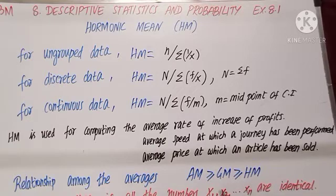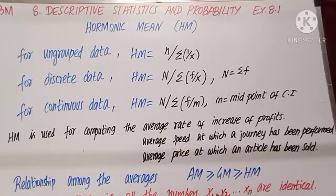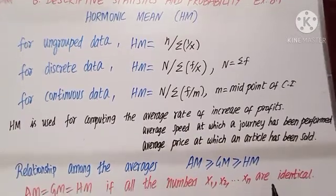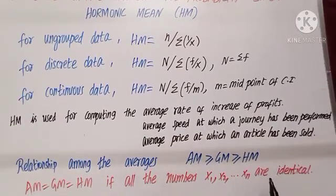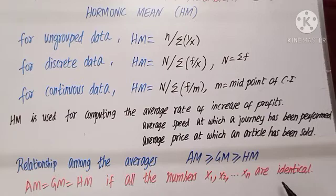Having learned the three different averages — AM, GM, HM — we must know the relationship between them. AM is the biggest of all three: AM ≥ GM ≥ HM. The equal sign applies when all the numbers x1, x2, up to xn are identical, in which case AM equals GM equals HM.